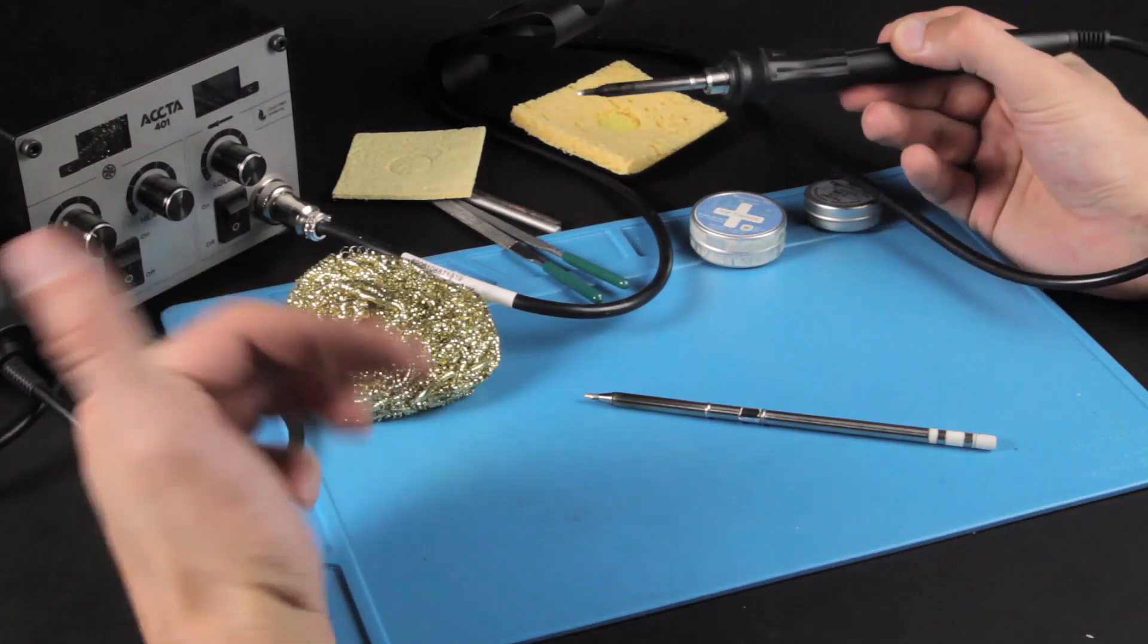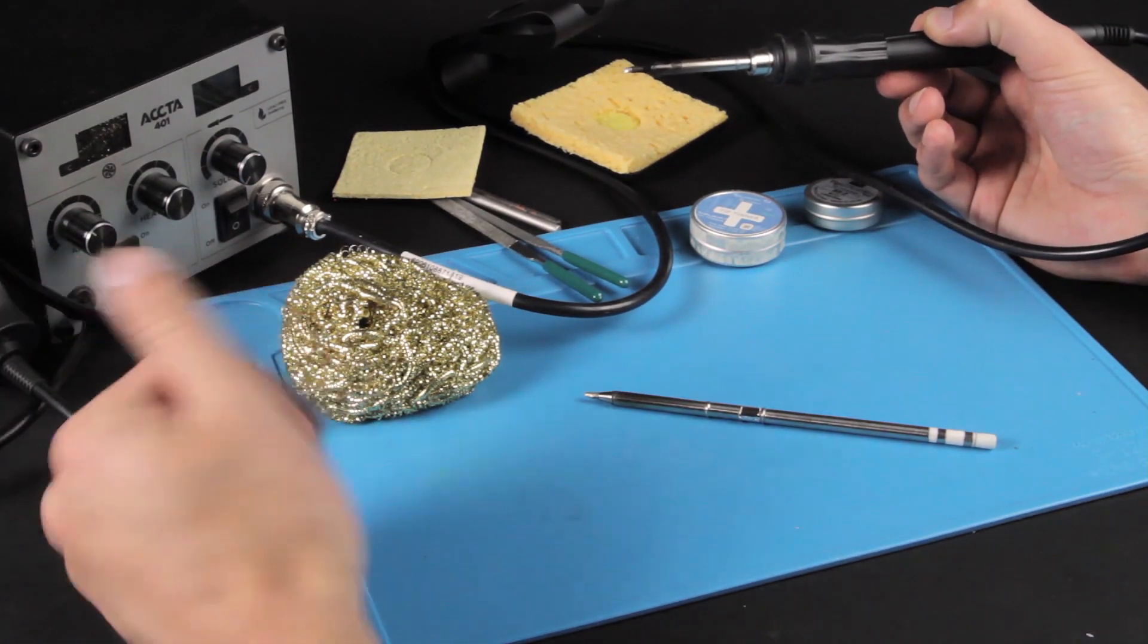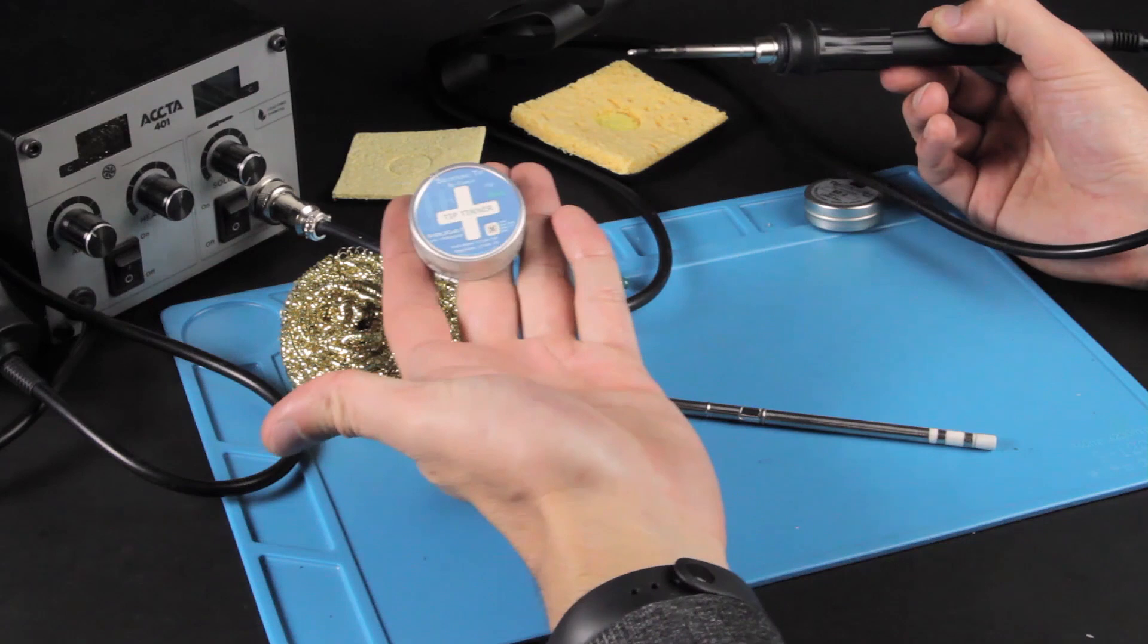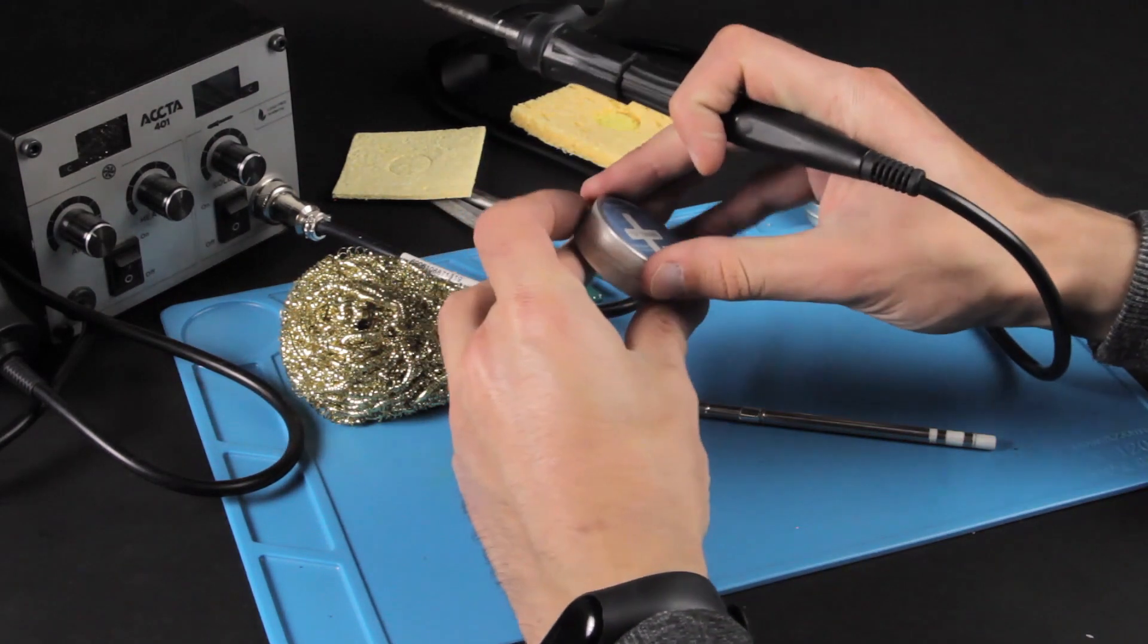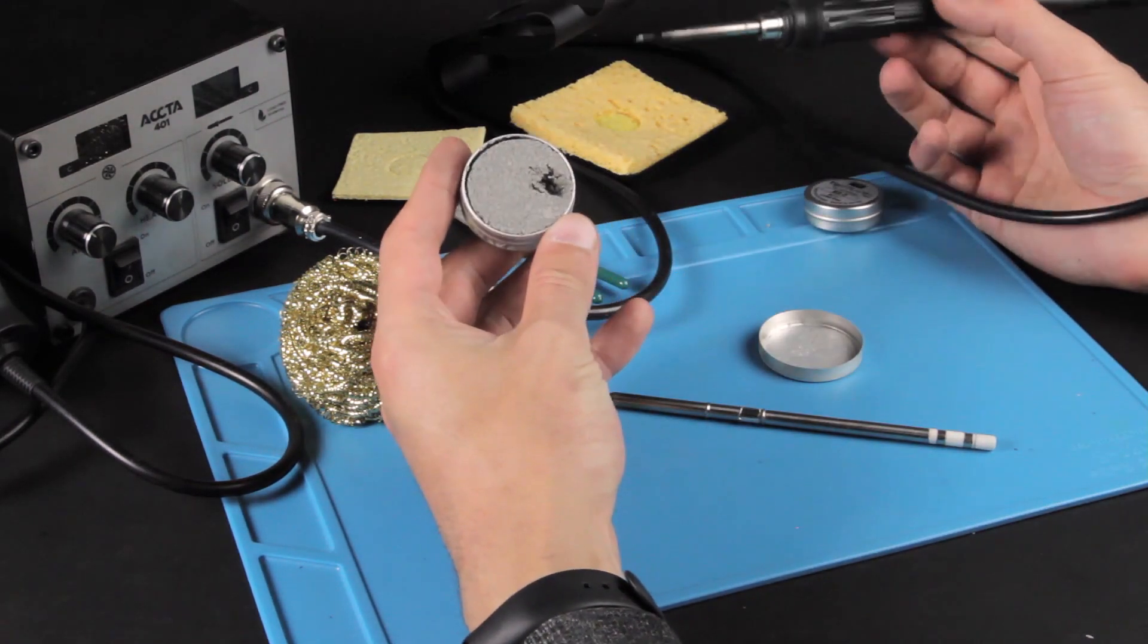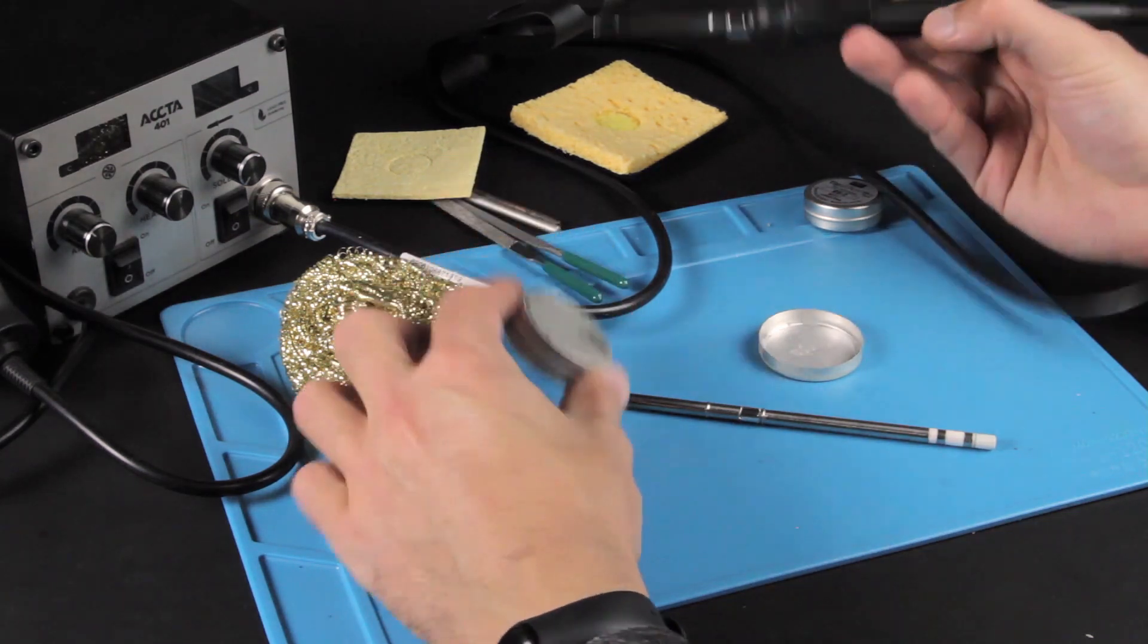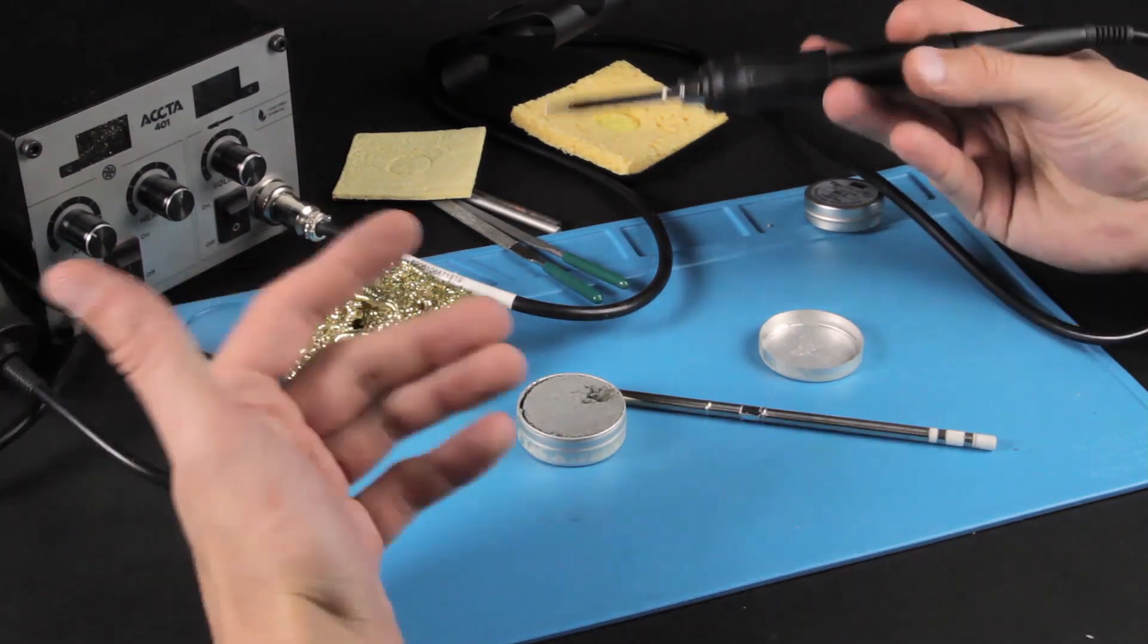In some difficult cases, when both previous methods don't help, you may use the special soldering tip refresher. It is a paste with active components that dissolve dirt on the soldering tip. The cleaning procedure is as follows.